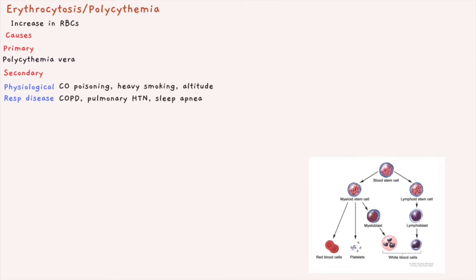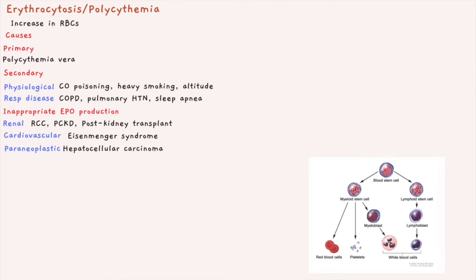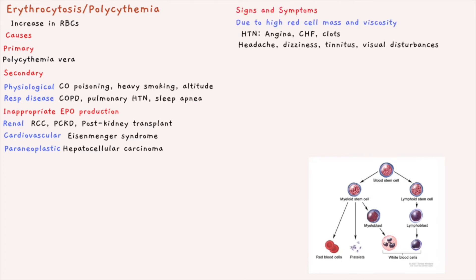Secondary causes also include respiratory diseases such as chronic obstructive pulmonary disease, pulmonary hypertension, or sleep apnea, as well as inappropriate EPO production. Kidney causes are common, for example renal cell carcinoma — which is a paraneoplastic syndrome — as well as polycystic kidney disease or post-kidney transplant. Rare cardiovascular causes include Eisenmenger syndrome, where blood shunts from right to left due to long-term atrial septal defect. Other paraneoplastic causes include hepatocellular carcinoma.